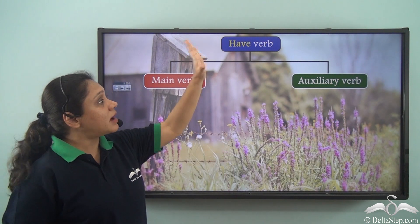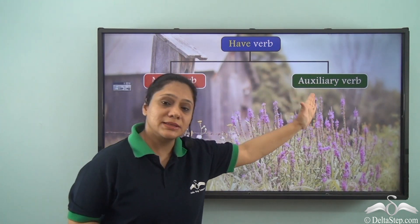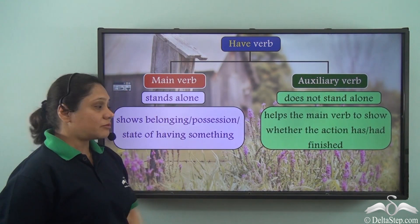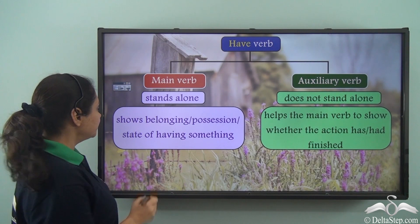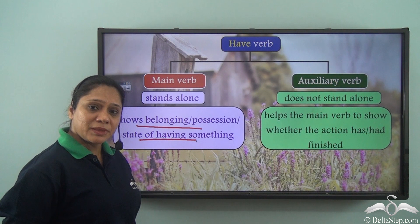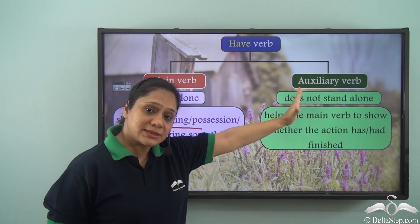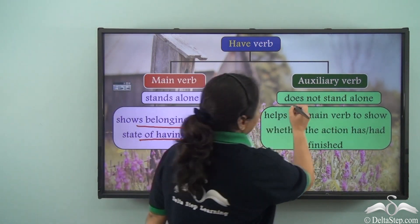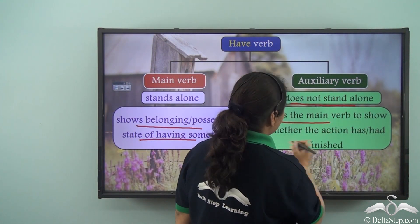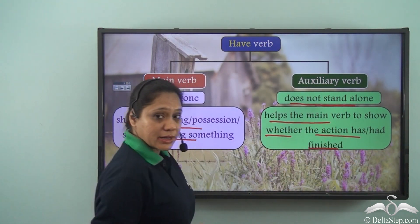So we know that the 'have' verb can act as the main verb or as the auxiliary verb. When it acts as the main verb, it stands alone and shows belonging, possession, or the state of having something. Whereas when the 'have' verb acts as an auxiliary verb, it does not stand alone — it helps the main verb show whether the action has or had finished.